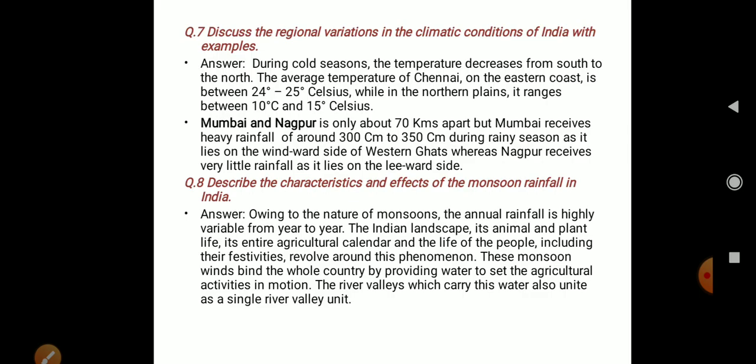Let's discuss the regional variations in climatic conditions of India with examples. The temperature decreases from south to north. The average temperature of Chennai on the eastern coast is between 24 to 25 degrees Celsius, while the northern plains range between 10 to 15 degrees Celsius.